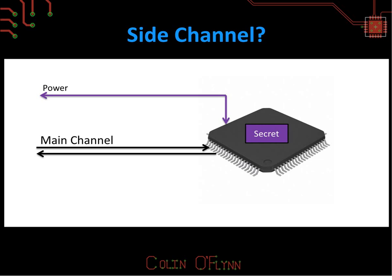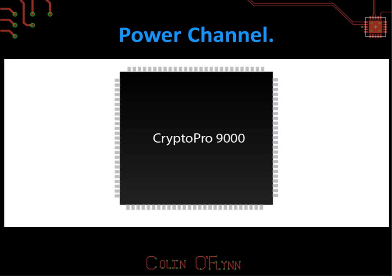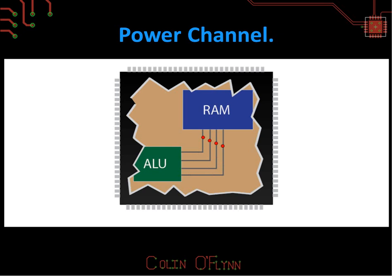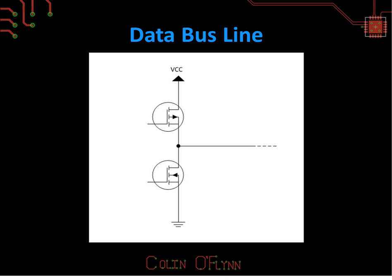By looking at the power being consumed by the device, we can actually learn something about what exactly the device is doing, and ultimately learn things like the secret key that are supposed to be impossible to recover. This seems freaky, and people say it must involve insane math, but it's actually very simple. Say we had some digital logic chip called the Crypto Pro 9000 — inside it, there are various parts connected by a data bus, which is effectively just wires.